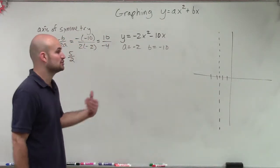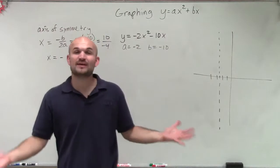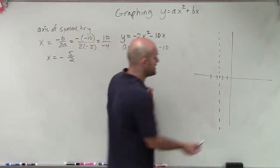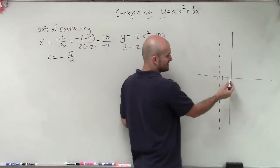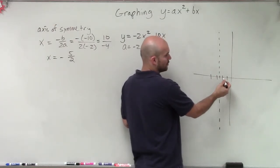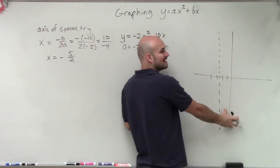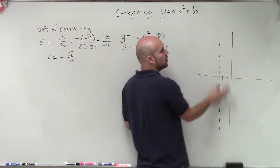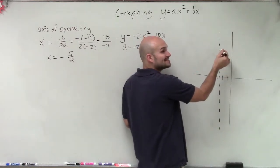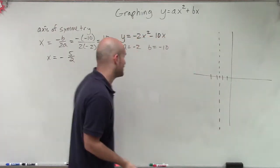Now what I need to do is choose points to the left and to the right of my axis of symmetry. I can't just pick random numbers like 0, 1, negative 1, negative 2, because those would all be on one side of my parabola and I wouldn't know that it crosses at the axis of symmetry. That's why we picked the axis of symmetry first, so we can pick points to the left and to the right to form our graph.